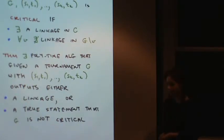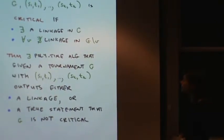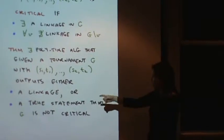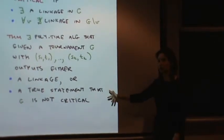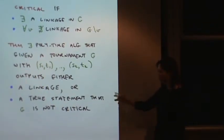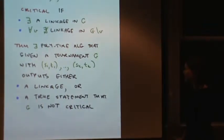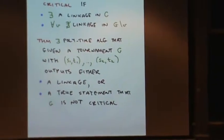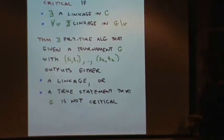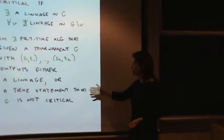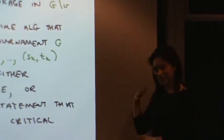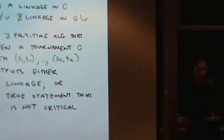The first step is to get a polynomial time algorithm to find the linkage in a critical graph. The idea is, if I give you a graph and I promise you it's critical, you need to give me the linkage. In fact, the algorithm is a little bit more general than that, because what it does is I give you a graph and a bunch of terminals, and either it gives me a linkage back or it says no, your graph wasn't critical.